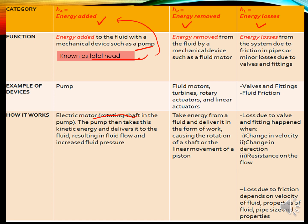For the second condition — when energy is being removed — the mechanical device used to remove energy is a fluid motor. Examples of devices used to remove energy include fluid motors, turbines, rotary actuators, and linear actuators. These devices take energy from the fluid and deliver it in the form of work, causing a shaft to rotate and making movement, such as in a piston.